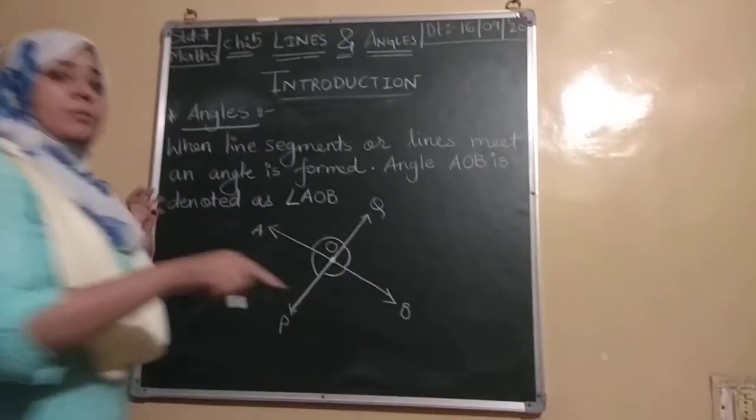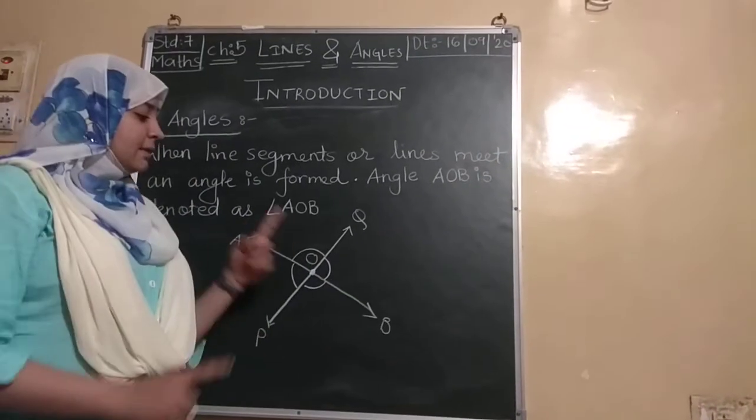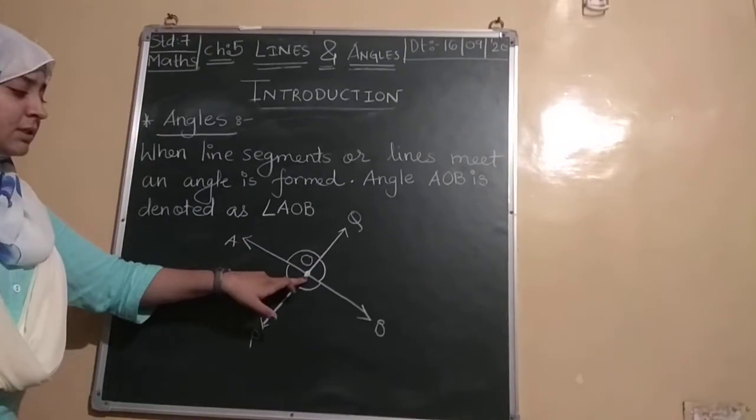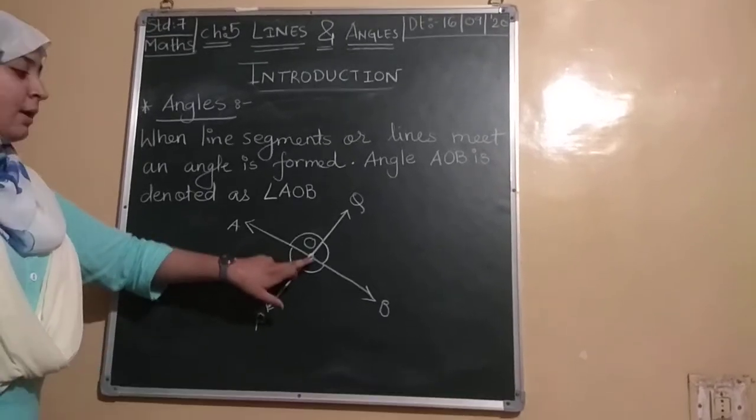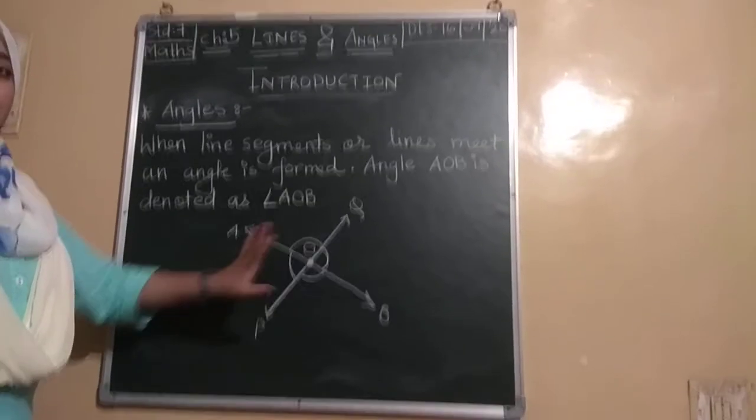And when is angle formation possible? When any line or line segment meet at one distinct point, intersect at one point. Then angles are formed.